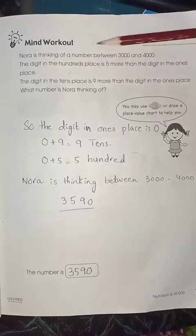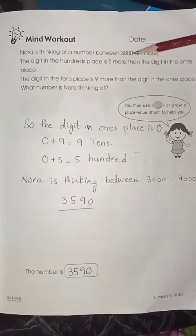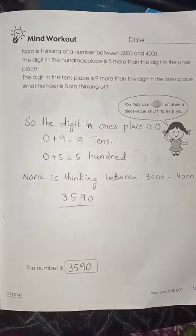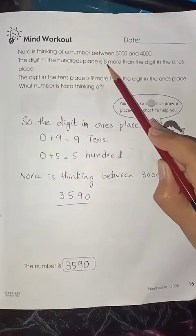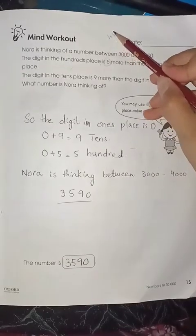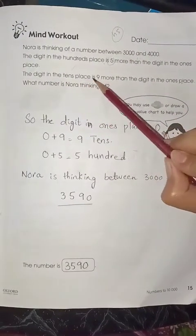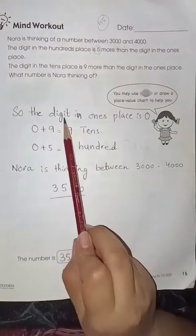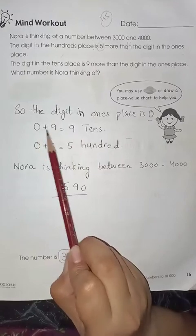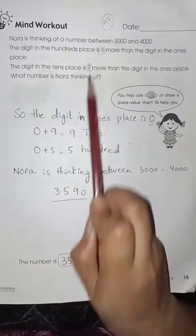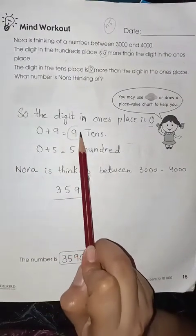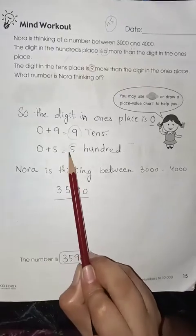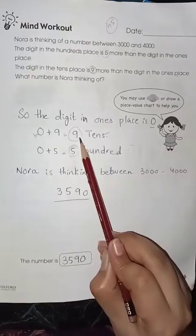Nora is thinking of a number between 3000 and 4000. The digit in the hundred place is 5 more than the digit in the ones place. The digit in the tens place is 9 more than the digit in the ones place. So the digit in the ones place is 0, because if we add 0 plus 9, tens become 9. And 0 plus 5 is 5 for hundreds.